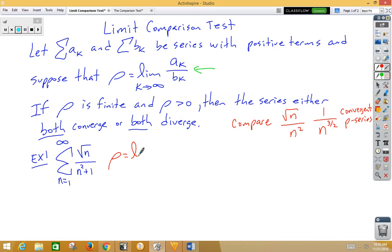So let's see what we can do. So we're going to take rho is the limit as n approaches infinity, and we're going to have root n over n squared plus 1 divided by what we're comparing it to, which is root n over n squared. Well, so we can go ahead and multiply by the reciprocal: root n over n squared plus 1 times n squared over root n. The root n's will cross out. So now we've got rho is the limit as n approaches infinity of n squared over n squared plus 1.